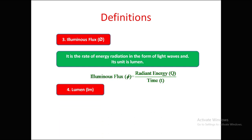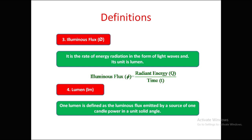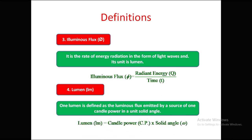The next definition is lumen (lm), which is the unit of luminous flux. One lumen is defined as the luminous flux emitted by a source of one candle power in a unit solid angle. The formula is: lumen (lm) = candle power (CP) × solid angle (omega).